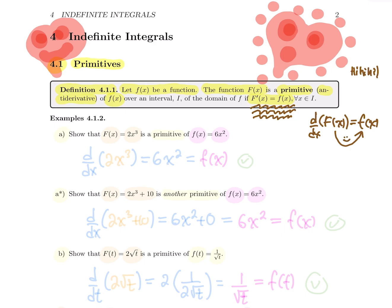We're not computing a derivative — we're trying to find a function such that if you compute its derivative, you find the function in your question. So let's do some examples. In this section, these examples are really just verification questions; there's no new computation. First example: let's show that big F, which is 2x cubed, is a primitive for the function small f, which is 6x squared. The only thing you have to do is compute the derivative of big F and verify if you get small f.